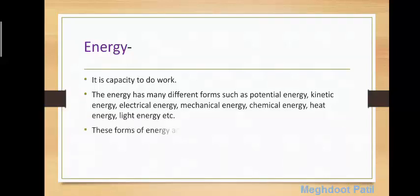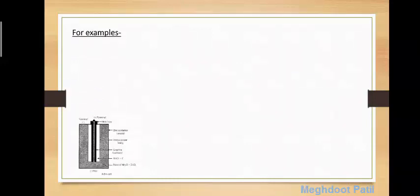These forms of energy are interconvertible. That means one form of energy can be converted to another form. Let us see some examples. First one is dry cell. In this dry cell, spontaneous chemical reaction produces electricity. That means chemical energy is converted to electrical energy.